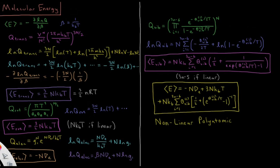The natural log of the translational partition function: using log(a^x) = x·log(a), we pull out 3n/2. Then using ln(a·b) = ln(a) + ln(b), we get 3n/2 times [ln(T) + ln(2πmk/h²)] plus n·ln(V) minus ln(n!), since log(1/x) = −log(x).